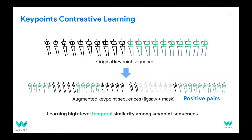The third auxiliary loss is contrastive learning. We mask parts of the keypoint sequence and train the network to learn whether a masked sequence is a positive pair with the original. This enforces high-level temporal consistency among keypoint sequences.